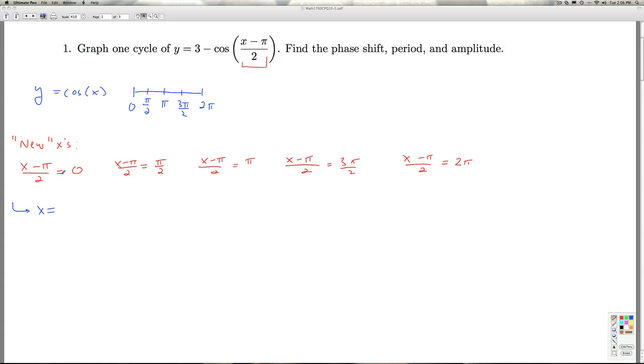So solving for x here gives x equals π. Solving for x here gives x equals 2π. Here we get x equals 3π, x equals 4π, and x equals 5π.